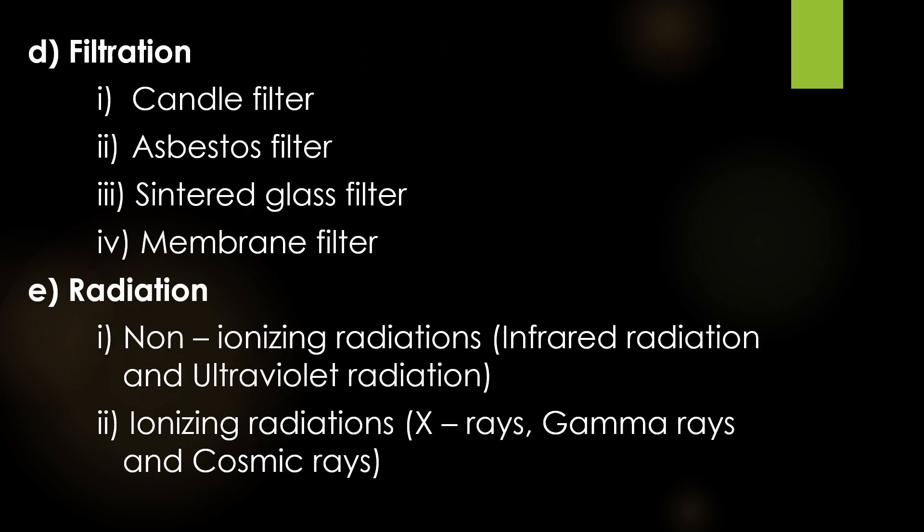The fourth method is filtration. Four types of filters are mainly used: candle filter, asbestos filter, sintered glass filter, and membrane filter. The fifth method is sterilization by using radiation. Two types of radiations are used: non-ionizing radiations and ionizing radiations. Non-ionizing radiations include infrared radiation and ultraviolet radiation, while ionizing radiations include X-rays, gamma rays, and cosmic rays. In this video, we are going to discuss the first 3 methods: drying, dry heat, and moist heat.